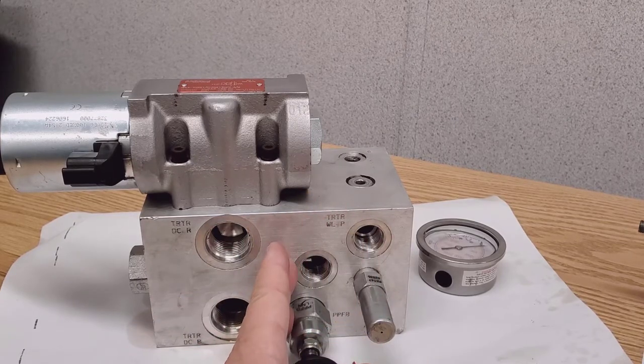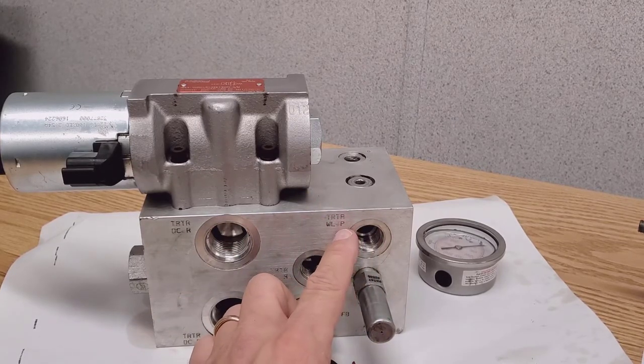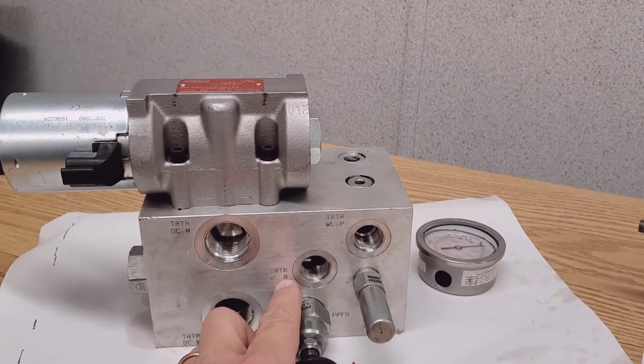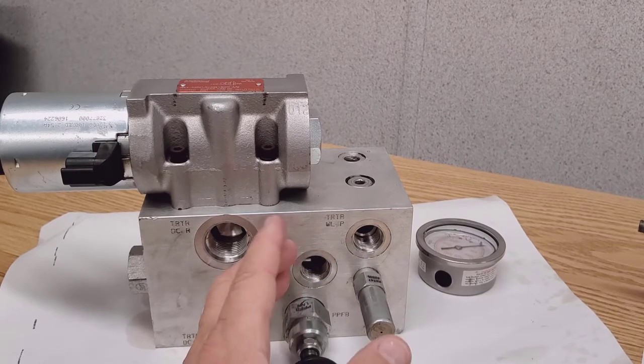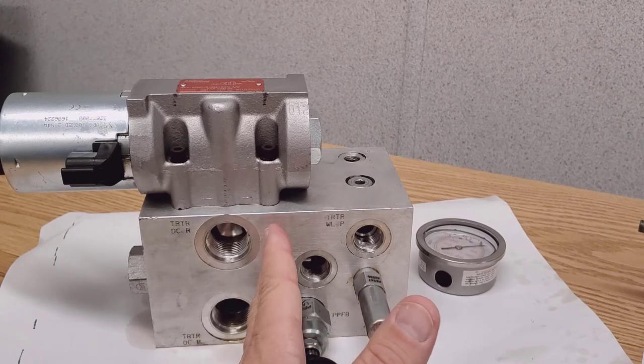The other side of the block is wing lift. So we have TR, TR, WLP and TR, TR, WLR. That's all wing lift stuff. We'll talk about that later.